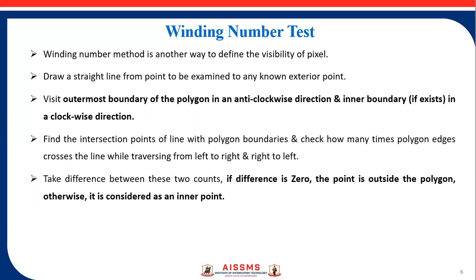Next is the winding number test. The winding number method is another way to define the visibility of a pixel. Draw a straight line from the point to be examined to any known exterior point. Traverse the outermost boundary of the polygon in an anti-clockwise direction and inner boundaries, if they exist, in the clockwise direction. Find the intersection points of the line with the polygon boundary, and check how many times polygon edges cross the line from left to right versus right to left. If the difference of these two counts is 0, the point is outside the polygon; otherwise it is considered inside.